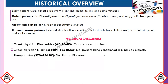Theophrastus published a book on plant poison titled 'Historia Plantarum'. The ancient Indian text Rigveda also describes several plant poisons. Greeks used plant poison as a means of execution — one such example is Socrates, who was executed by administration of the plant poison known as hemlock.